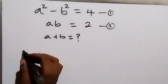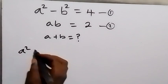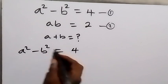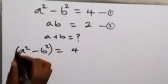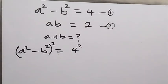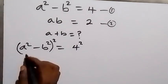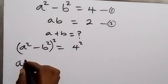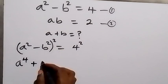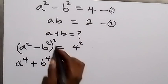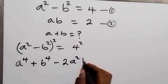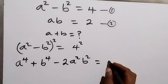So from equation 1, we have a squared minus b squared equals 4. From here, let's take the square on both sides. When we expand, this will become a raised to power 4 plus b raised to power 4, minus 2 times a squared times b squared, equals 4 squared, which is 16.